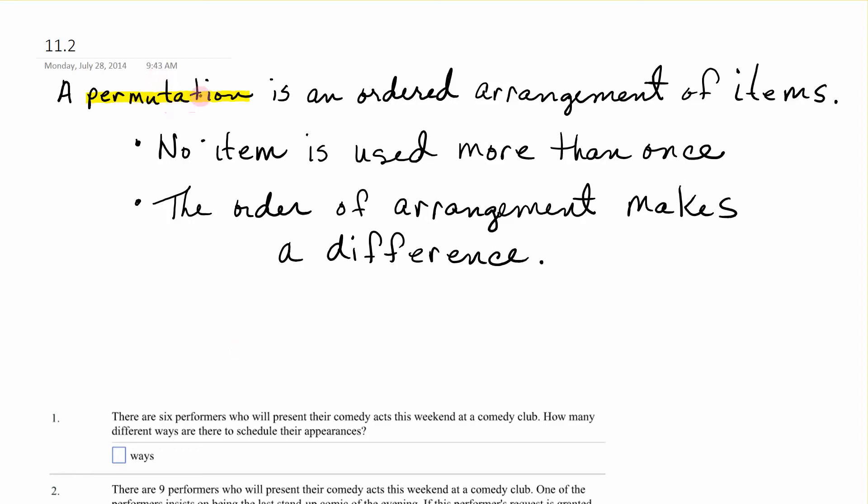A permutation is an ordered arrangement of items. In a permutation, no item is used more than once, and the order of the arrangement makes a difference.